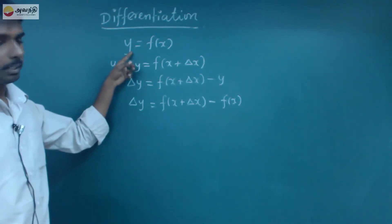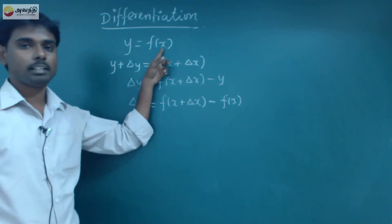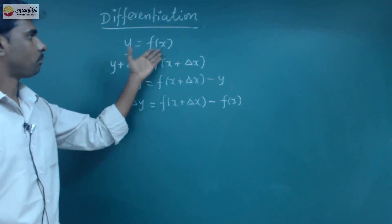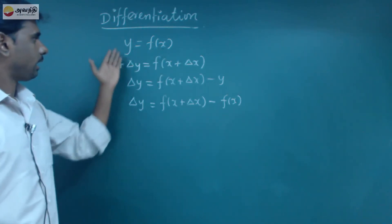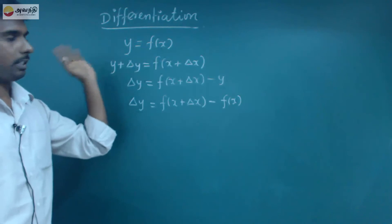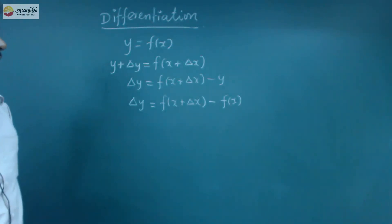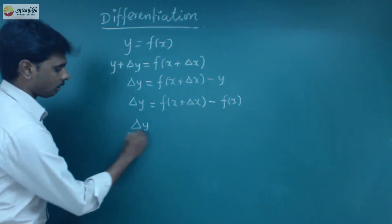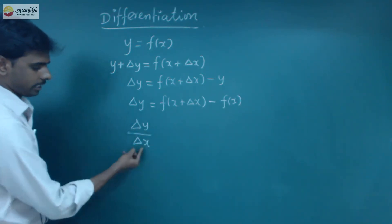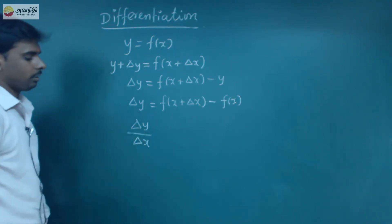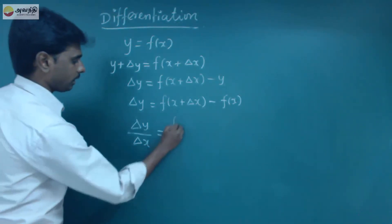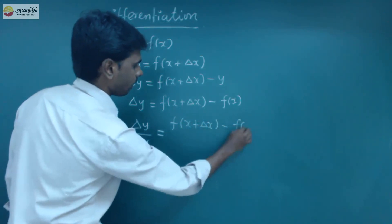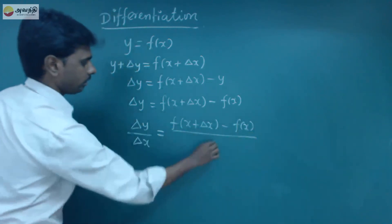y is the dependent variable and x is the independent variable. What changes is a function of x and a function of y, meaning dependent and independent variables — x is free. So, what will be changed is delta y by delta x. That is, delta y by delta x is equal to f of x plus delta x minus f of x, divided by delta x.